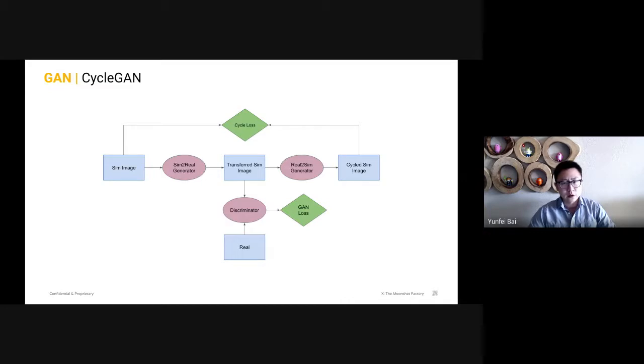So with CycleGAN, the goal here is to make the transfer sim image as realistic as possible. However, it doesn't guarantee that it's useful for the actual robot task. For example, for grasping, it may produce very realistic images, but in the process may also remove some of the objects from the image if they are not easily transformed to realistic versions. So how can we enforce the generated images to be useful for certain robot tasks?